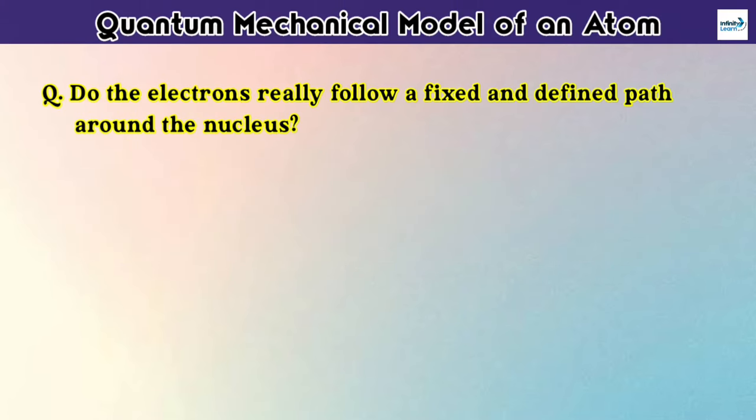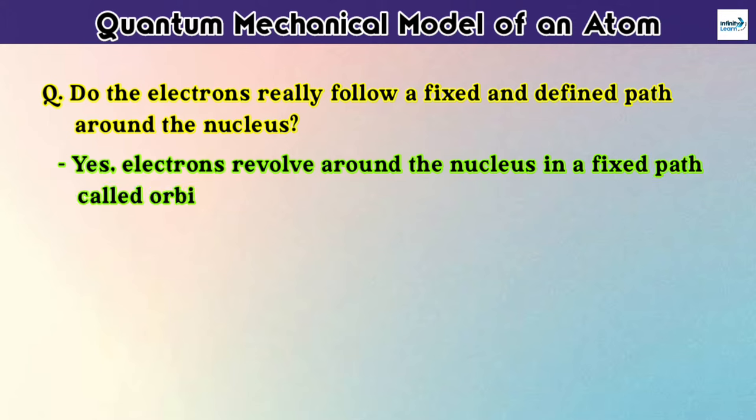So now I have a question for you. Do the electrons really follow a fixed undefined path around the nucleus? Yes, electrons revolve around the nucleus in a fixed path, called orbits.